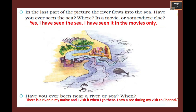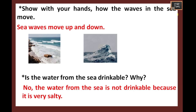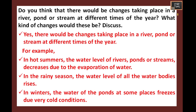You can write whether you saw the river meeting the sea in a movie or not. Have you ever been near a river or sea? There is a river in my native place and I have visited it — you can write whether you have seen a river or sea near your place. Show with your hands how the waves in the sea move — sea waves move up and down. Is the water from the sea drinkable? No, you cannot drink sea water because it is very salty. Do you think there would be changes in a river, pond, or stream at different times of the year? What kind of changes would these be?